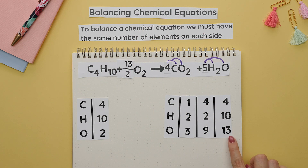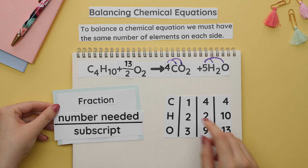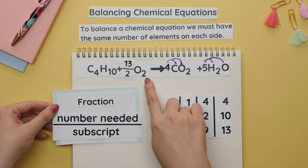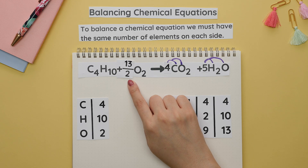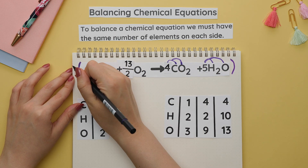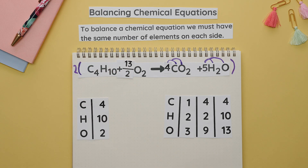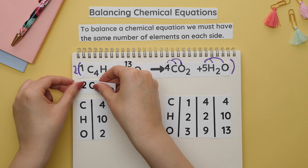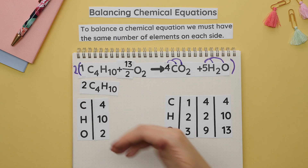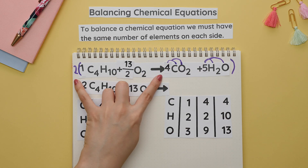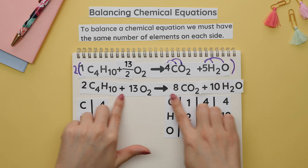The only thing left to balance are the oxygens, but there is no whole number that multiplies by two to give thirteen — this is where fractions come in. If we place a fraction of thirteen halves in front of O2, this gives us thirteen oxygens. We find this fraction by putting the target count on the numerator and the oxygen subscript on the denominator. The final step is to eliminate the denominator by multiplying the entire equation by two — the same number as the denominator. Distribute the two to each coefficient to get our balanced chemical equation with whole number coefficients.